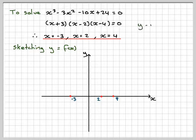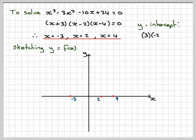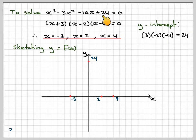Where does it cut the y-axis? Well, you can either do -3 times 2 times 4, which gives you 24, or you can get it straight from this point here, which is 24. They don't have to be the same scale, it's just a sketch.